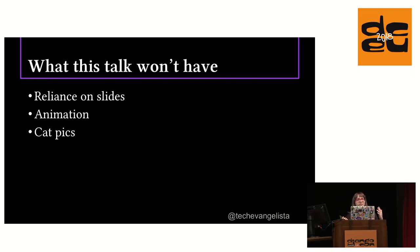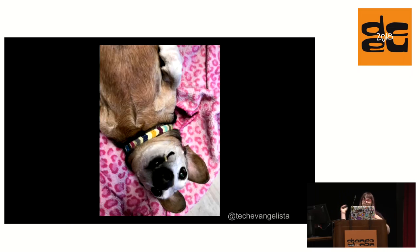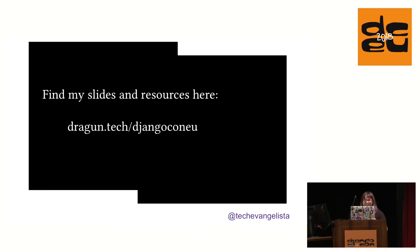What this talk won't have is a reliance on slides, so if you can't see them very well, you won't miss too much. It also won't have any animation and it won't have any cat pictures — I'm a dog person. That's Remus, he's a cutie. After the talk, my slides will be up at dragoon.tech slash DjangoCon EU.